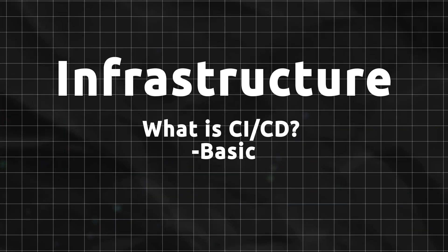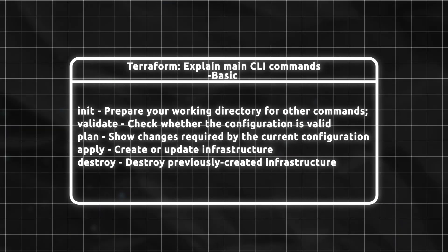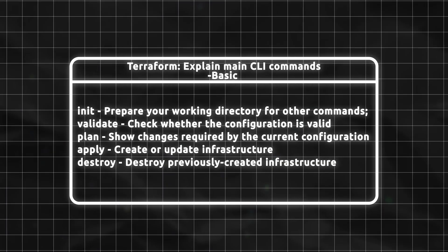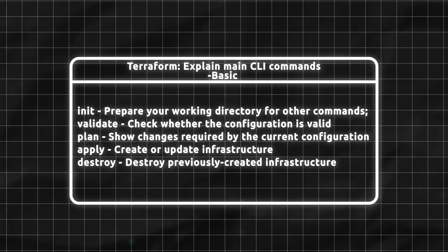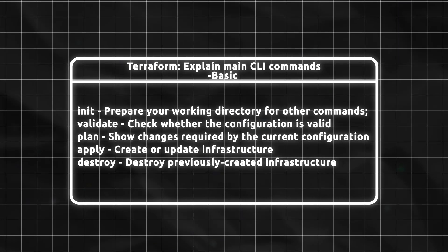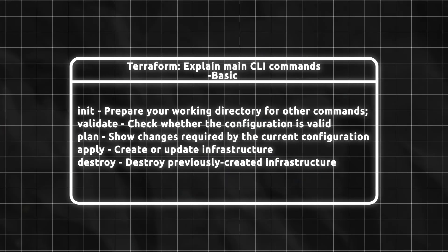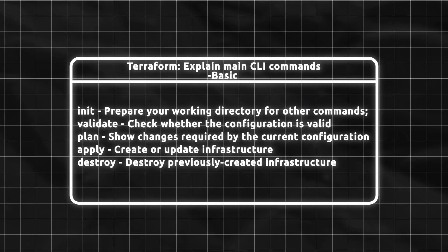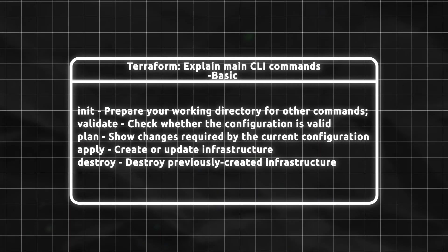Infrastructure. What is CI/CD? CI/CD, or continuous integration and continuous delivery, is a set of software development practices that automate the integration, testing, and delivery of code changes. It involves regularly merging code changes from multiple contributors via Git, automatically building and testing the software and delivering it to various environments. Terraform - explain main CLI commands: init - prepare your working directory; validate - check whether the configuration is valid; plan - show changes required by the current configuration; apply - create or update infrastructure; destroy - destroy previously created infrastructure.